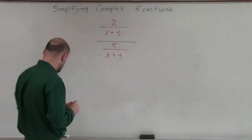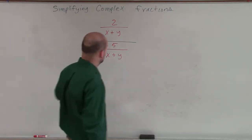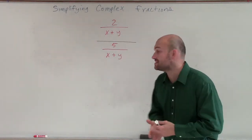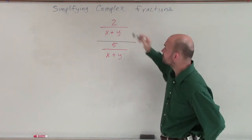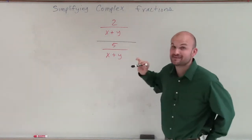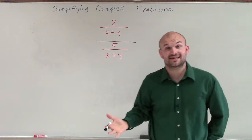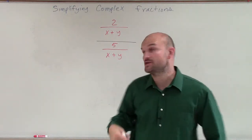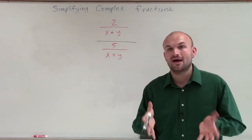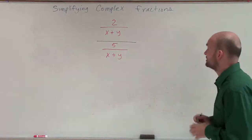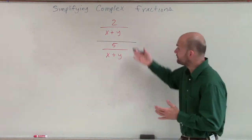On a problem like this, there is actually a shortcut we could go through. The answer is just going to be 2 fifths. Because when we have the same term in the numerator and the same term in the denominator being divided by the same value, we know that's going to undo itself. So I know the answer right now is 2 fifths. But let me show you how I know that's going to be 2 fifths.